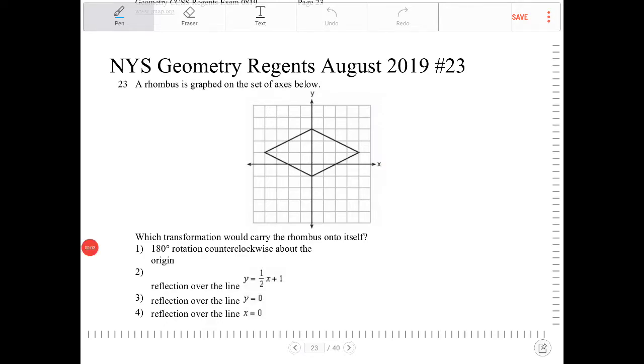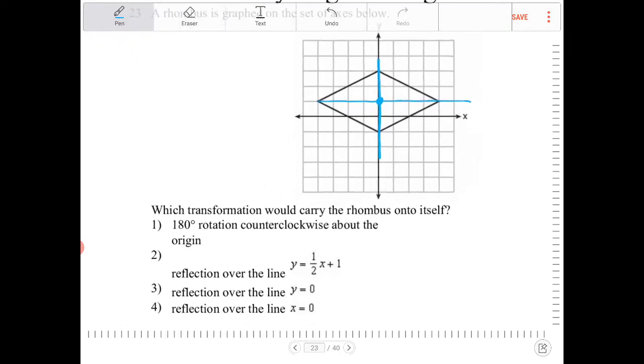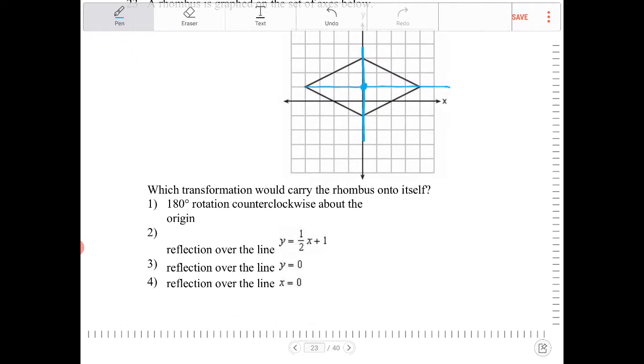A rhombus is graphed on the set of axes below. Which transformation could carry the rhombus onto itself? A rhombus has several symmetries. It has vertical and horizontal symmetry, or symmetry over the diagonals. It also has rotational symmetry of 180 degrees. So let's see if any of these matches the description.